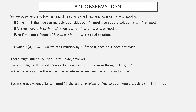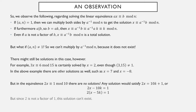But the equivalence 2x ≡ 1 mod 10 has no solutions at all. Here a = 2 is not relatively prime to n = 10, and I claim there are no solutions, because suppose 2x ≡ 1 mod 10. Then 2x is a multiple of 10 plus 1, so 2x minus 10k = 1, and you can factor a 2 out of the left side. So we've established that 2 is a factor of 1, which it isn't. Therefore 2x ≡ 1 mod 10 has no solutions, and 2 and 10 are not relatively prime.